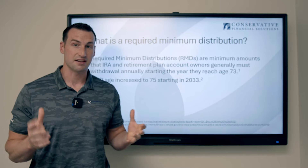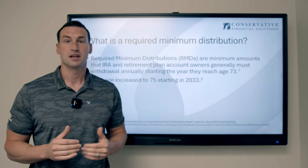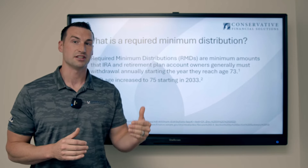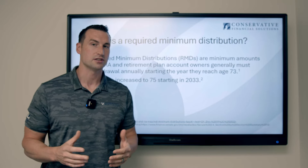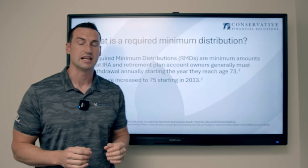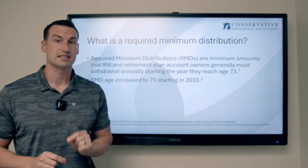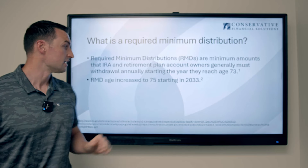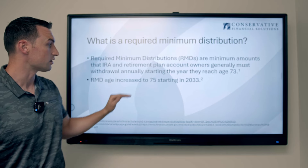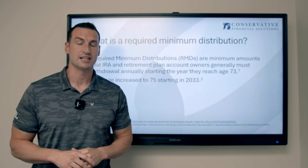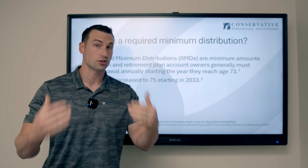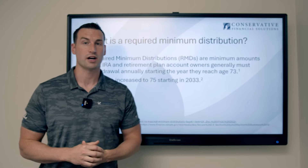It was previously age 70 and a half, then it increased in 2019 to age 72, and then again in 2022 it increased to age 73. If you're born in 1960 or later, it's actually set to increase again in 2033, so your required minimum distribution age would be age 75.